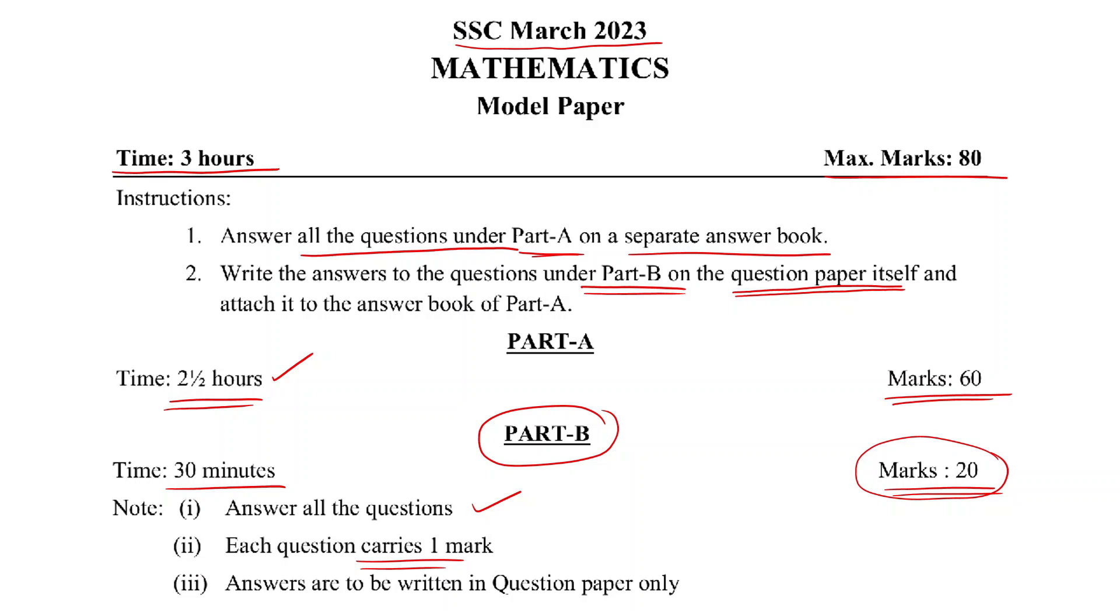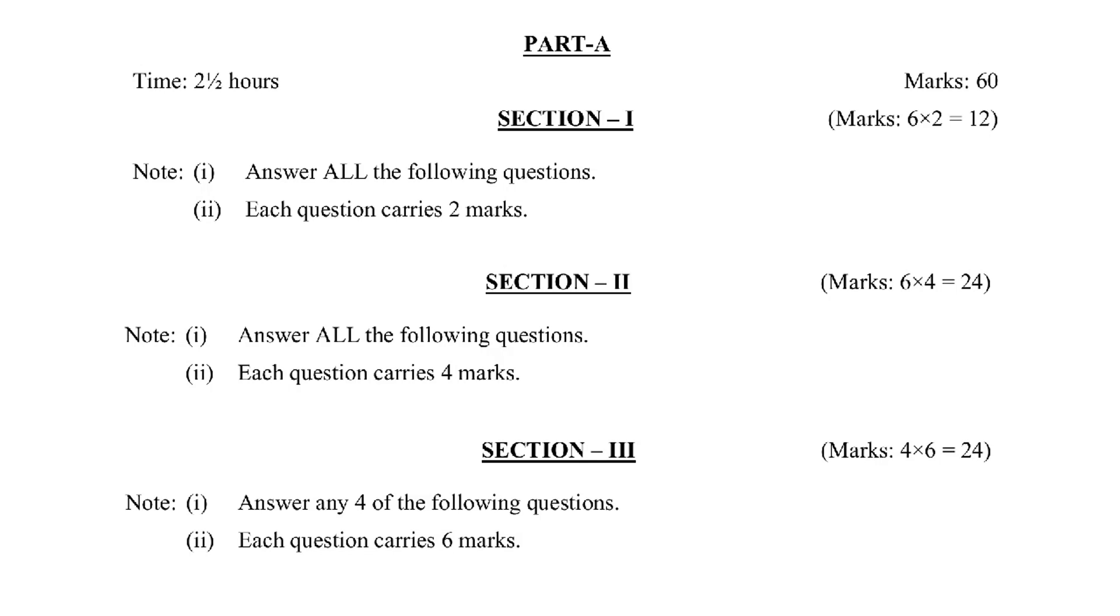Now let's look at sections. Part A, 2 and a half hours time, 60 marks. Section 1, you have to answer all the questions. Each question carries 2 marks, total 6 questions. 6 times 2 marks, total 12 marks. Section 1, 6 questions is complete.